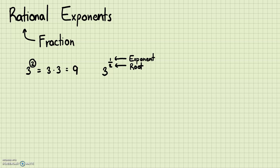When the exponent is 1, that's just the same thing as the original — it's not really interesting when the exponent is 1. So even in fractions, when the numerator is 1 you don't really need to worry about that exponent. Let's focus on the denominator. So if the 2 is in the denominator, that means it's going to be a square root.